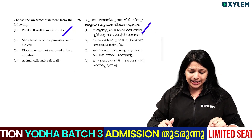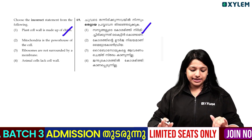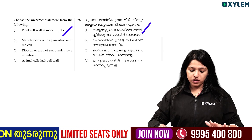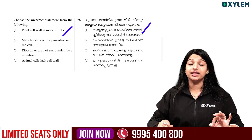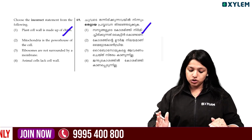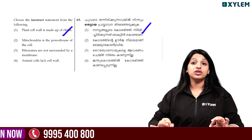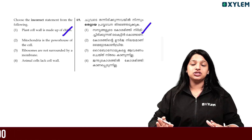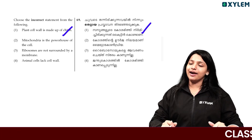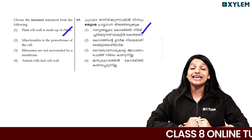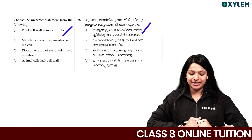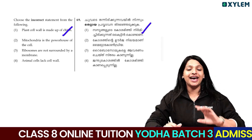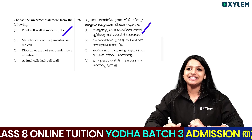Choose the incorrect statement from the following. Plant cell wall is made up of chitin. Mitochondria is the powerhouse of the cell. Ribosomes lack cell wall and animal cells lack cell wall. Chitin is incorrect — plant cell wall is not made of chitin. Chitin is the right answer for the incorrect statement.